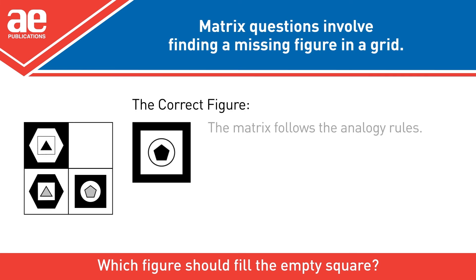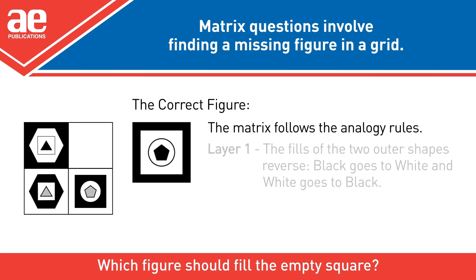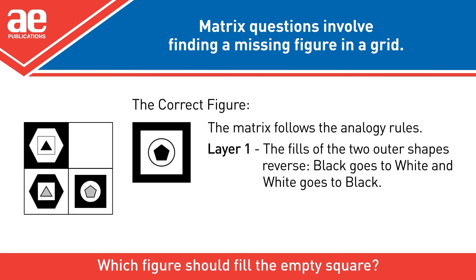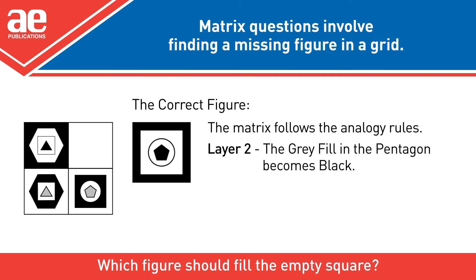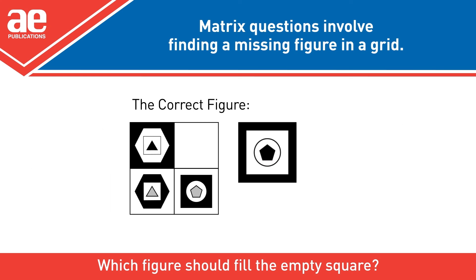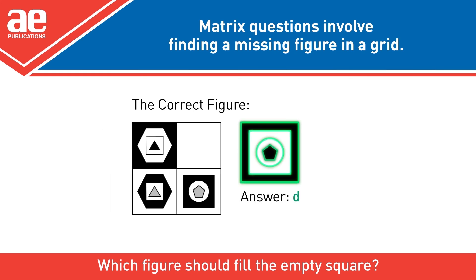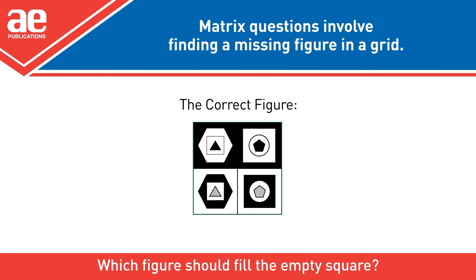The correct figure follows the analogy rules. Layer 1: The fills of the two outer shapes reverse — black goes to white and white goes to black. Layer 2: The grey fill in the pentagon becomes black. D is the correct answer. Yes! The correct answer is D. Thank you.